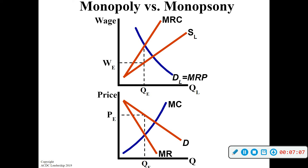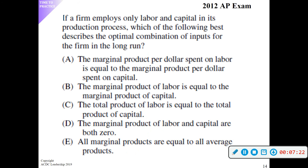It's a monopoly but instead of producing products, you're hiring workers — it's literally the upside-down version. For the AP test: if a firm employs only labor and capital in its production process, the optimal combination of inputs in the long run is when the marginal product per dollar spent on labor equals the marginal product per dollar spent on capital — which is basically MRC equals MRP, meaning you want what you get in revenue to equal what you pay for workers.